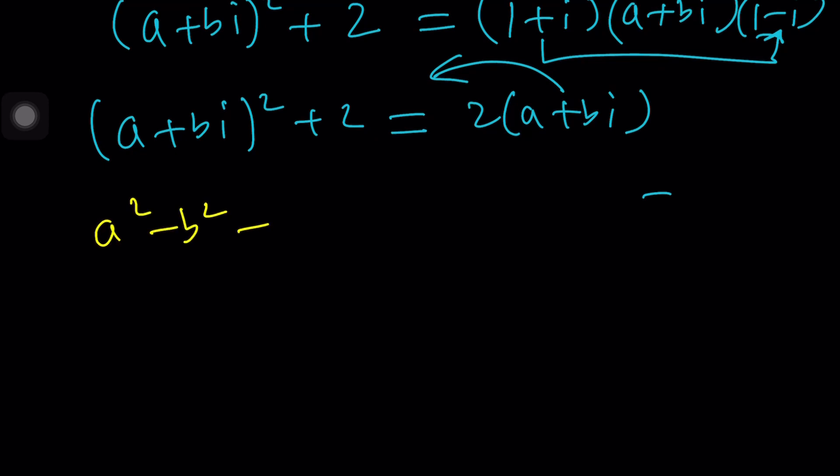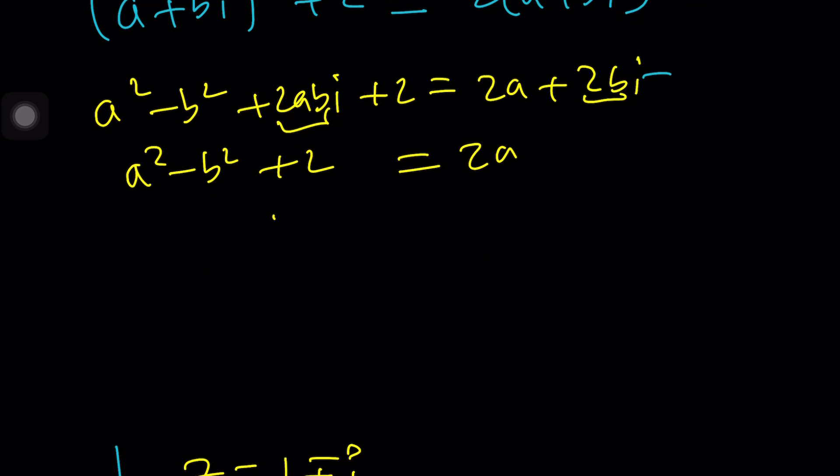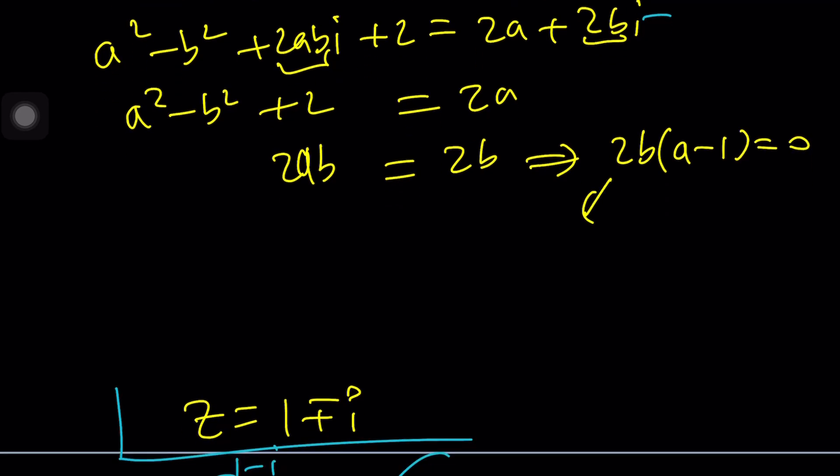All right, so let's go ahead and expand it. A squared minus b squared plus 2abi plus 2 equals 2a plus 2bi. If you put the real parts together, this real part is going to equal this real part, and imaginary parts 2ab will be 2b. I was able to say that, and from here obviously you can factor out a 2b and a minus 1 equals 0.